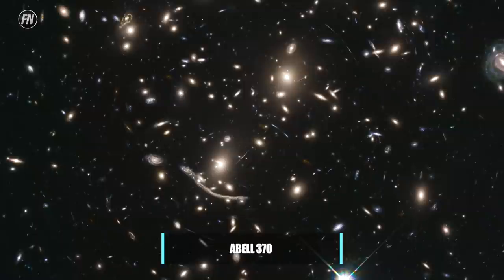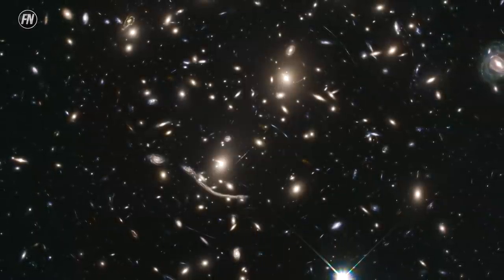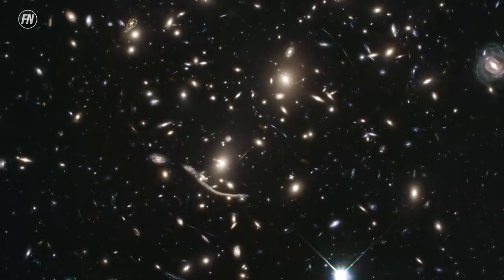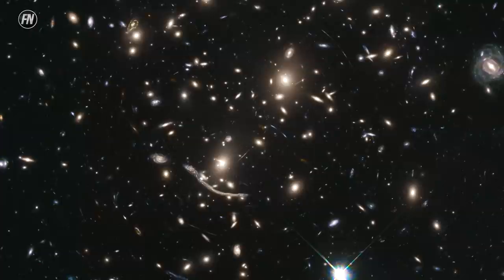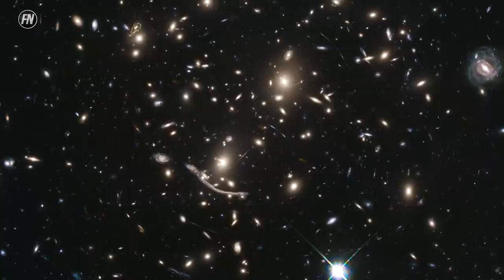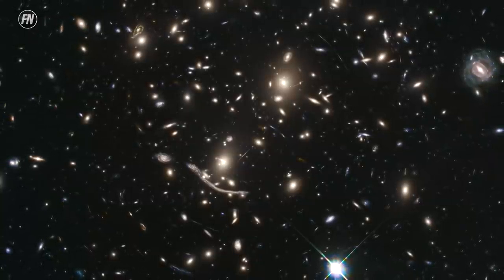ABEL 370. No, those bright lights aren't stars, they're galaxies. Several hundred, in fact, of various shapes, sizes, and colors, all pulled together to form the ABEL 370 cluster, thanks to our old friend, gravity. The enormous gravitational force acting on the cluster is enough to magnify and distort light.